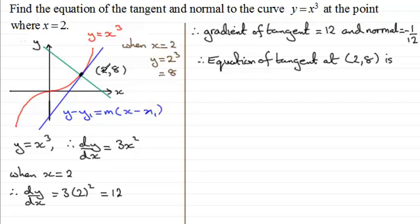x1, y1 are the points here, 2, 8 respectively, and m is the gradient, which we've got for the tangent is 12.